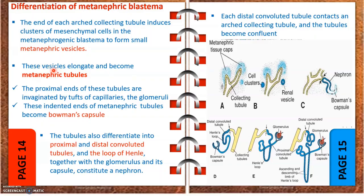These metanephric vesicles elongate and undergo different changes, eventually becoming the metanephric tubes. The proximal end of these metanephric tubes is invaginated by the glomerulus — the capillary tuft in which filtration occurs.